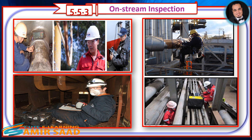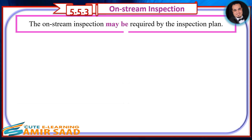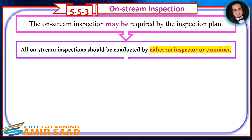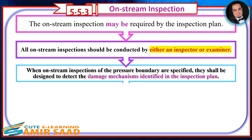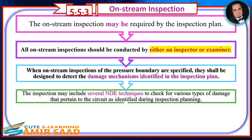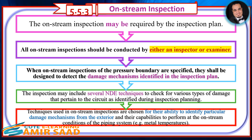The on-stream inspection may be required by the inspection plan. All on-stream inspections should be conducted by either an inspector or examiner. When on-stream inspections of the pressure boundary are specified, they shall be designed to detect the damage mechanisms identified in the inspection plan. The inspection may include several NDE techniques to check for various types of damage pertaining to the circuit. Techniques are chosen for their ability to identify particular damage mechanisms from the exterior and their capability to perform at on-stream conditions, for example metal temperatures.